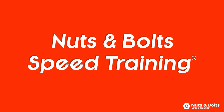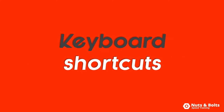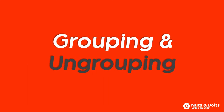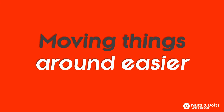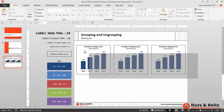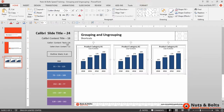This is Nuts and Bolts Speed Training with your keyboard shortcuts for grouping and ungrouping objects, which makes moving things around on your slides a lot easier. Here in PowerPoint, if I click and drag to select the objects on my slide, you can see I have three different graphs and three rectangles that I'm working with.